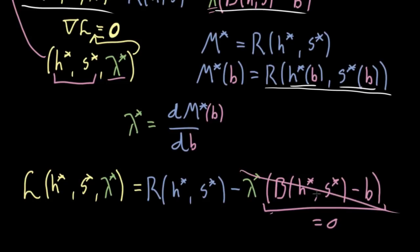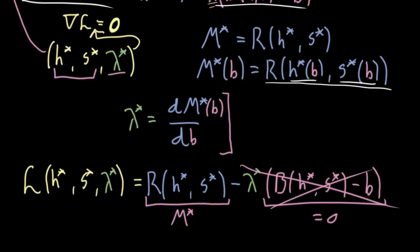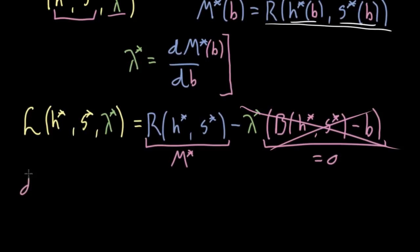So by virtue of how h* and s* are defined as solutions to the constrained optimization problem, this whole constraint portion goes to zero. We can cancel all that out. What's left is the maximum possible revenue. So when you evaluate the Lagrangian at the critical point h*, s*, and lambda*, it equals m* — the maximum possible value for the function you're trying to maximize.